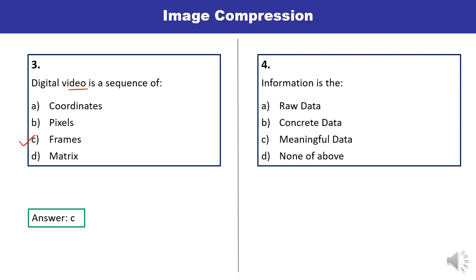Question 4: Which particular kind of data is related to information — raw data, concrete data, meaningful data, or option not given? Information is related to meaningful data. It means C is the correct answer.